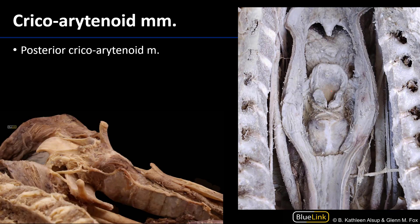Finally, we have the cricoarytenoid muscles. There are both lateral and posterior cricoarytenoid muscles. They both originate on the cricoid cartilage, albeit in different places — their names will reveal that. They both also attach to the muscular process of the arytenoid cartilage. So there are the vocal processes anteriorly, and then laterally there are muscular processes to which these cricoarytenoid muscles attach.